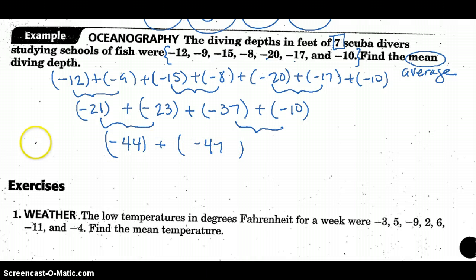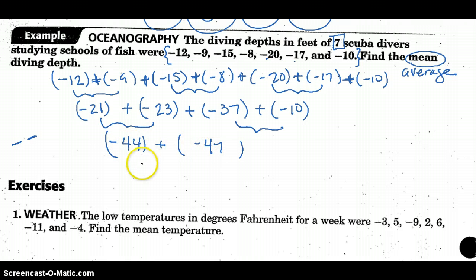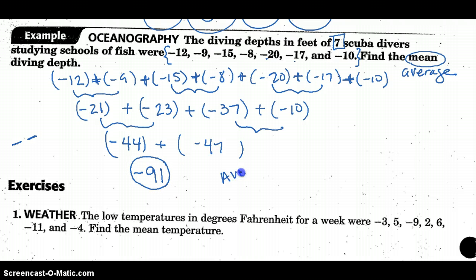We're not multiplying here — somebody's thinking: why isn't two negatives turning positive? This is all addition. We're adding negatives. When you add, you keep the sign if they're both negative. We don't have opposite signs — we have the same sign — so we're adding them up. The associative property lets us pair them: negative 12 plus negative 9 is negative 21, negative 15 plus negative 8 is negative 23, and continuing gives us negative 91.